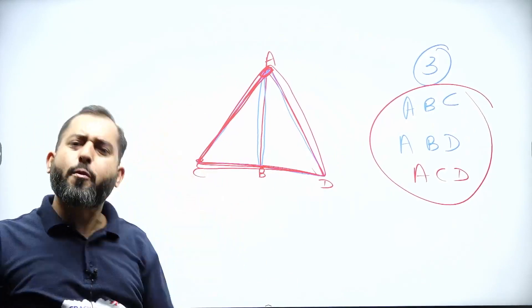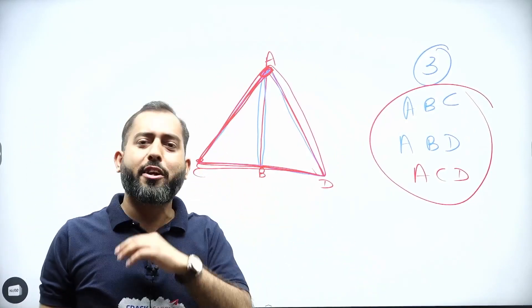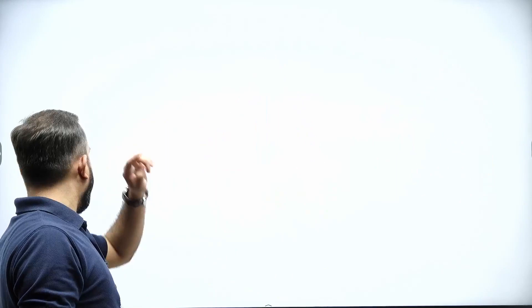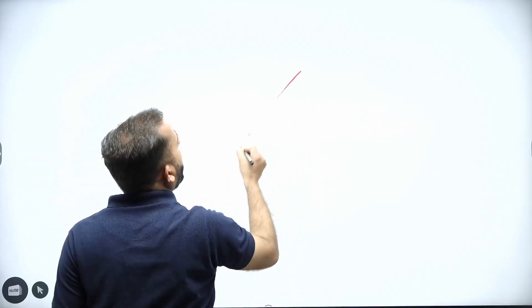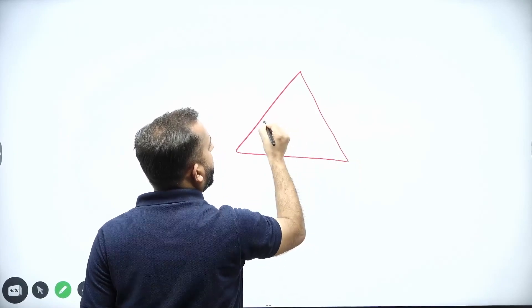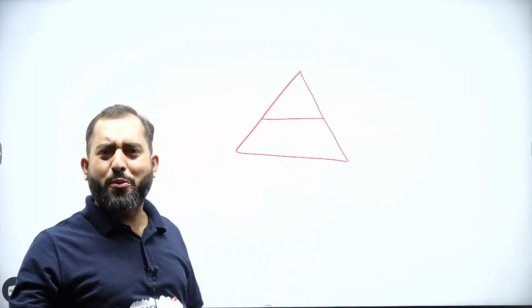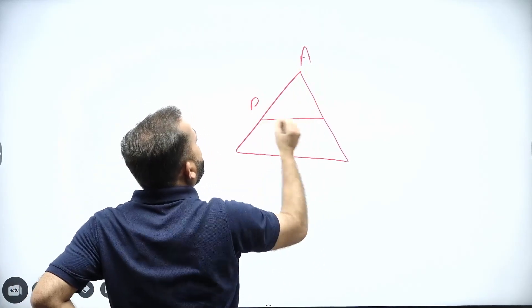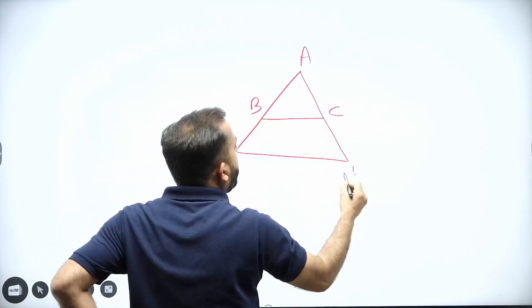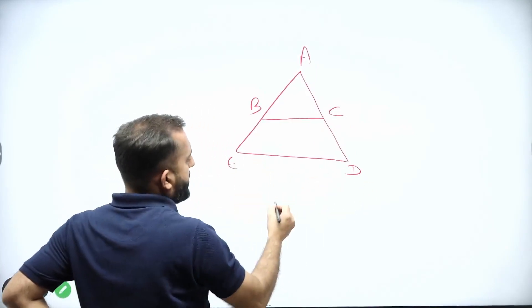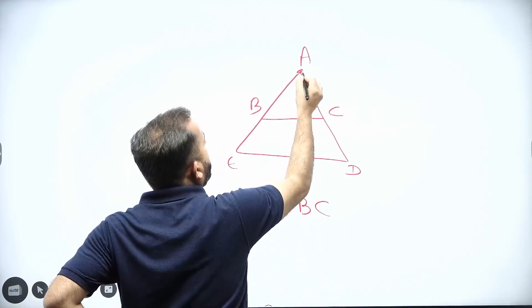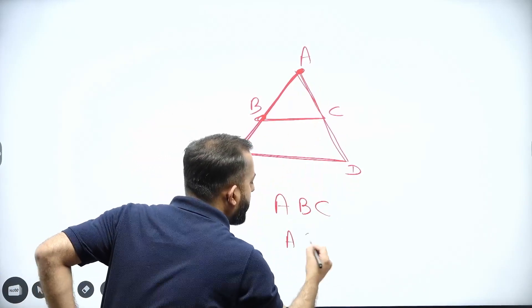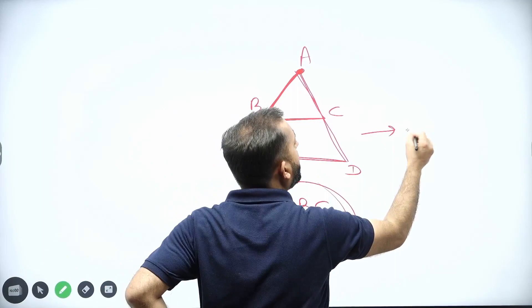Perfectly fine, no issues. Now what if I ask you how many triangles are there in this next figure? Very easy — you will say two triangles. This is point A, B, C, D, and E. One triangle is ABC, another triangle is AED. Only two triangles are there.